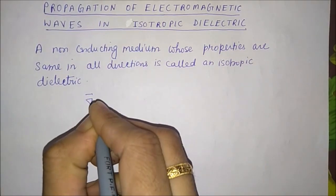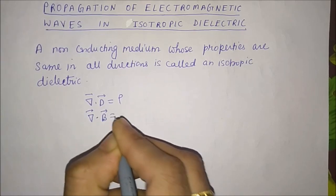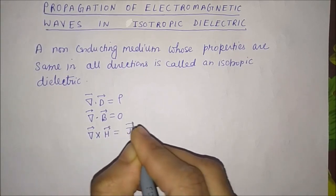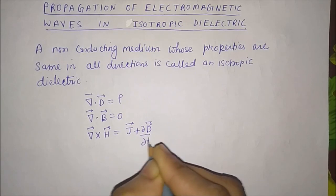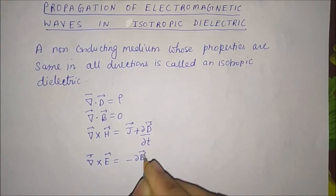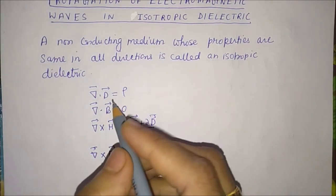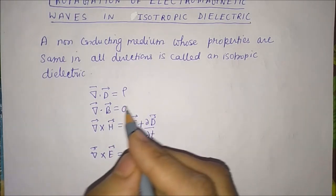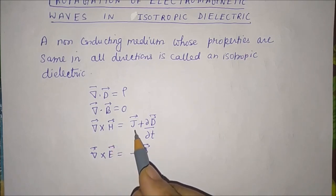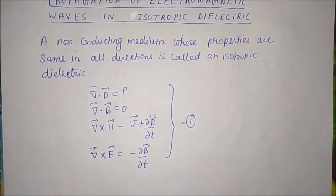From Maxwell's field equations we have: del dot D equal to rho, del dot B equal to zero, del cross H equal to J plus ∂D/∂t, and del cross E equal to minus ∂B/∂t. Here D is the electric displacement vector, B is the magnetic induction vector, H is the magnetic field, J is the current density, and E is the electric field. Let us name this equation number one.